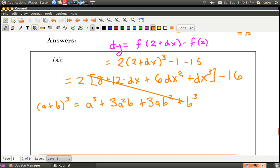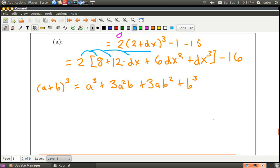And so now I just need to bring in the 2. So the 2 is going to go in and hit all of its friends, so what happens, that makes 16 plus 24 dx plus 12 dx squared plus 2 dx cubed, and I've still got just minus 16 there on the end.